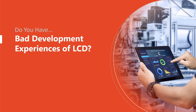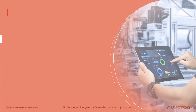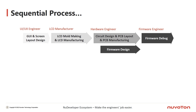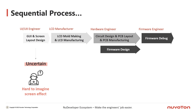Have you ever encountered any challenges while developing an LCD project? From the LCD development process viewpoint, it's a sequential flow path. The process starts with designing the LCD screen by UI/UX engineers, which is then made by an LCD factory. While LCD specifications are locked down, it's the hardware engineer's turn to design and prepare hardware, and meanwhile firmware engineers can start to work. However, during this process, people encounter three problems. First, UI/UX engineers have no references and no actual LCD screen view to know what it would be like, resulting in many uncertainties in the planning stage.